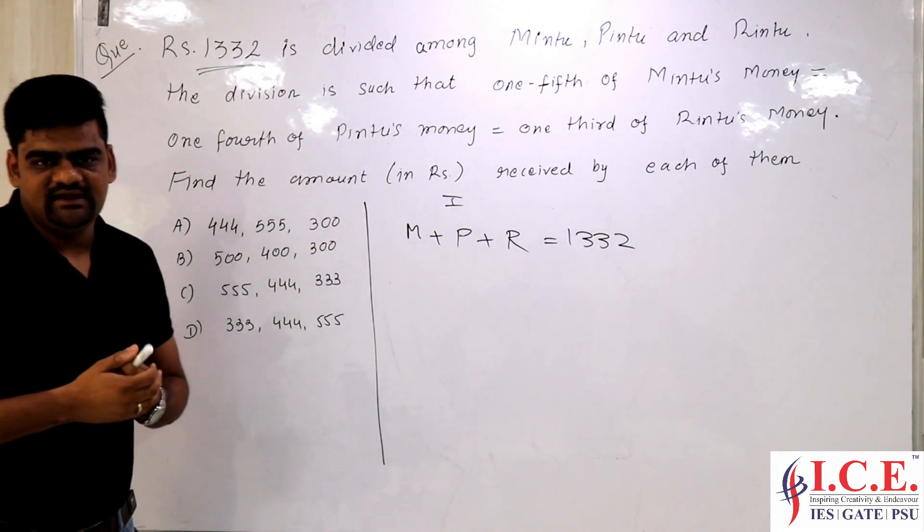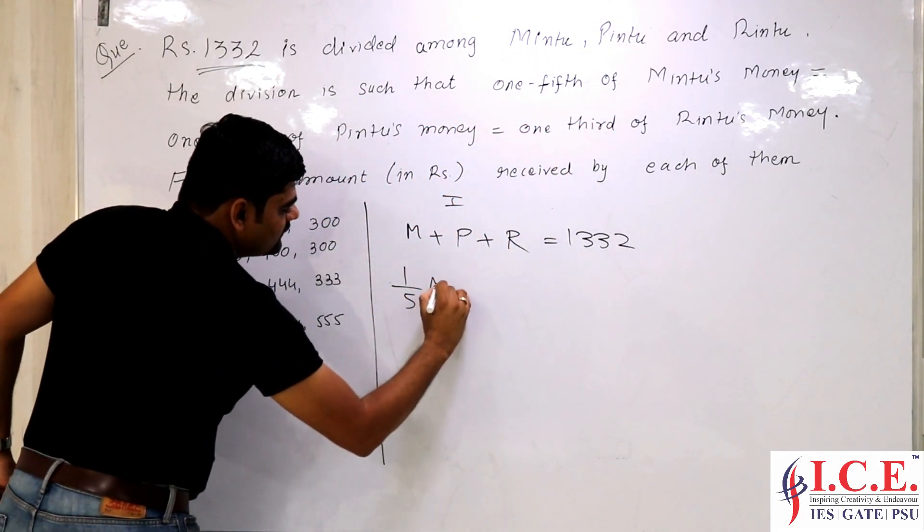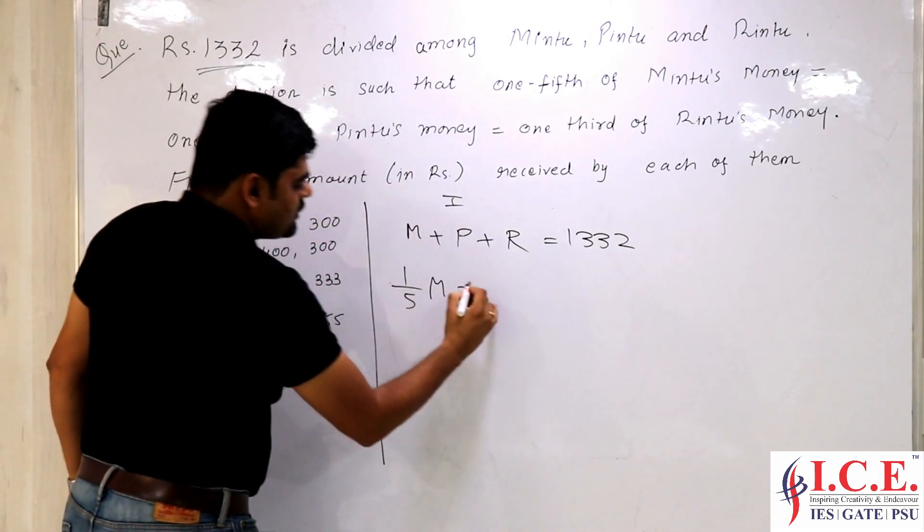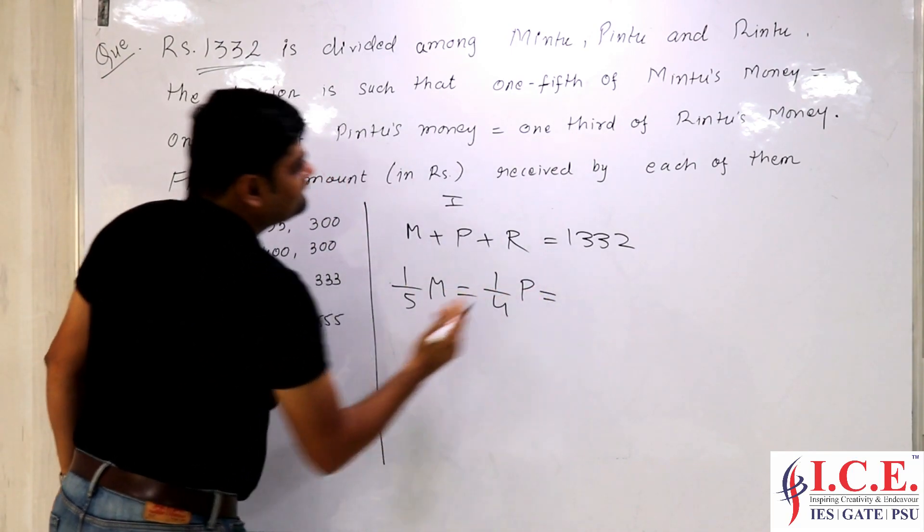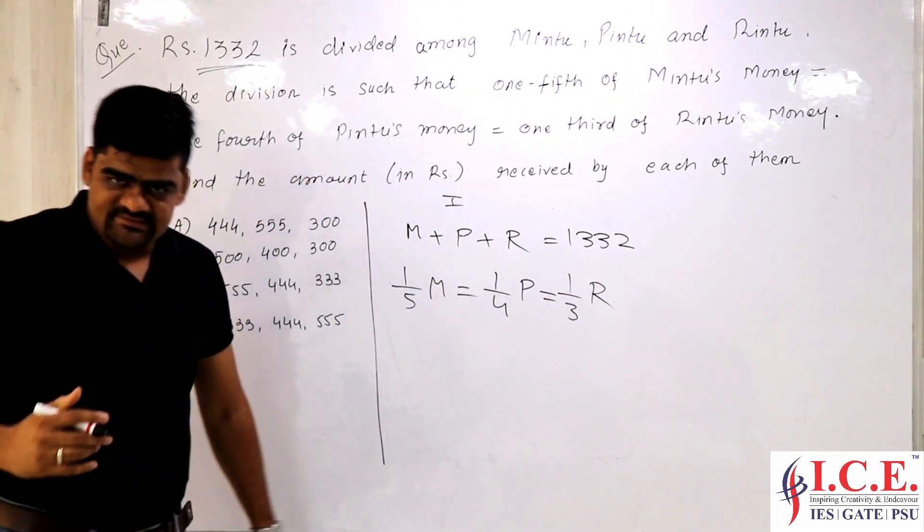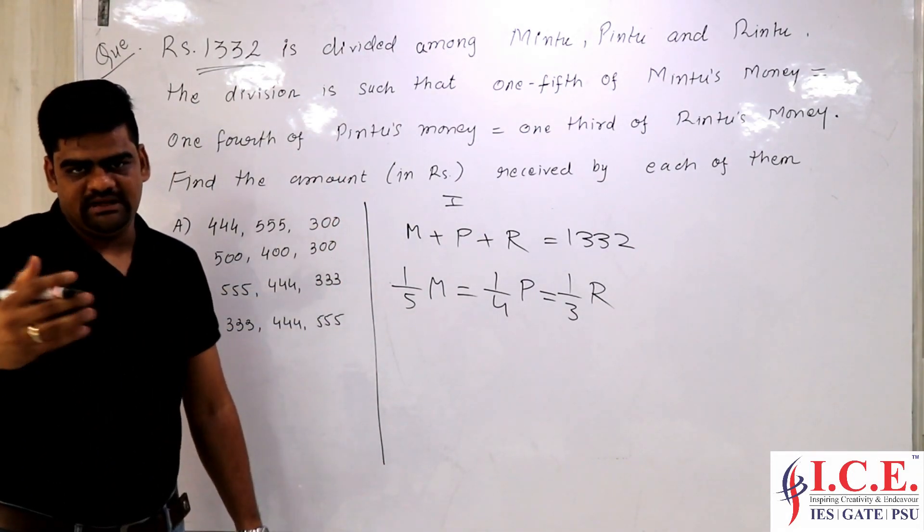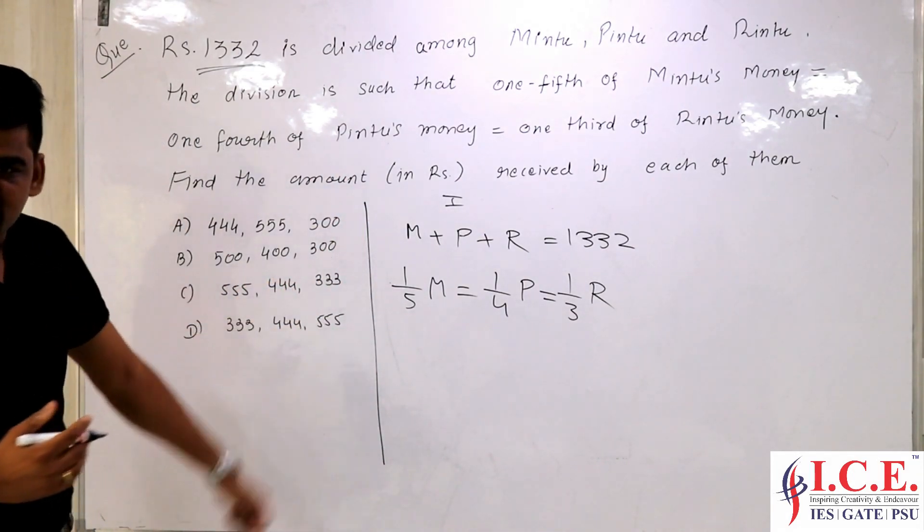Second connection between these three we have got is one-fifth of M equals one-fourth of P equals one-third of R. So we have got a relation between M, P and R and he will ask me the value of M, P and R. And there are options given to us.